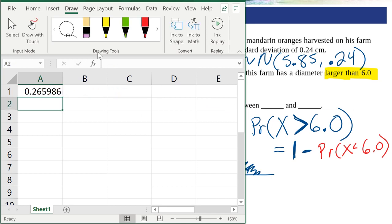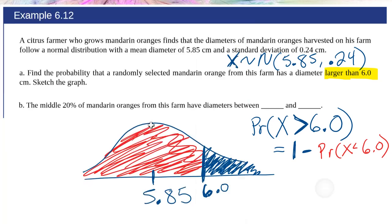And there you go. Voila, there's the answer. 0.2659. If I round that to two decimal places, it's 0.27.